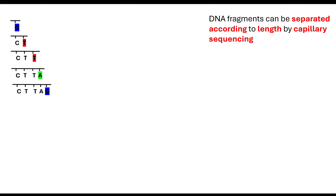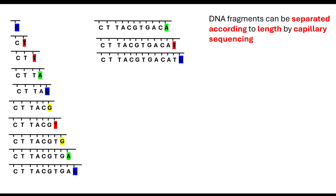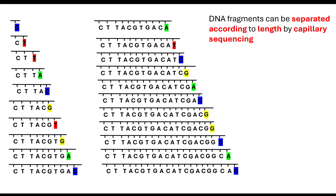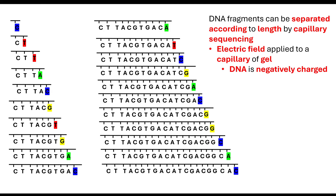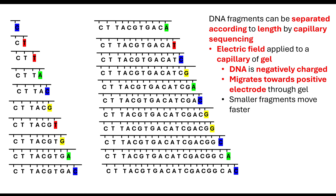We can then separate those fragments according to their length by what's known as capillary sequencing, using gel electrophoresis — but this time applying an electrical field to a capillary of gel. DNA is negatively charged, so it will migrate towards the positive electrode through the gel, and smaller fragments will move faster.